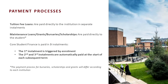In terms of the payment process, tuition fee loans are paid directly to the universities. Your maintenance loan and any grants, bursaries or scholarships are paid directly to you as the student. Your maintenance loan comes in three installments throughout the year. The first installment is triggered by enrollment — typically September. The second and third installments are automatically paid at the start of each subsequent term, typically in January and just after Easter.